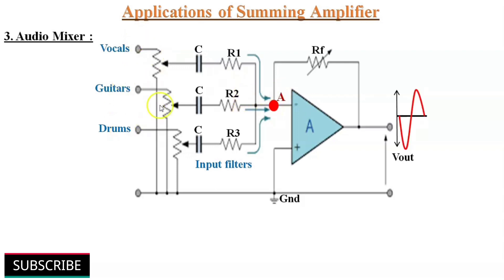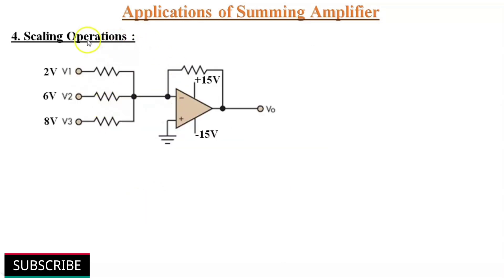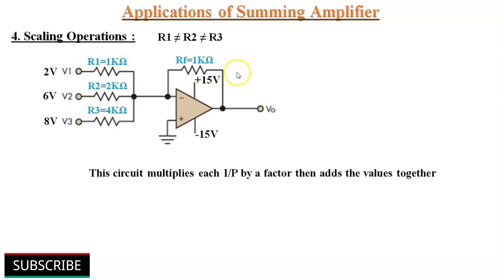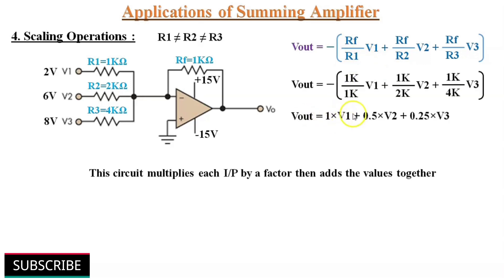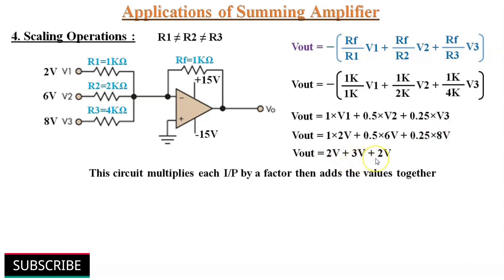A summing amplifier can also perform scaling operations. If all 3 input resistor values are different, then this circuit multiplies each input by a factor determined by the ratio of the feedback resistor to the input resistor, and then adds the values together. For example, Vout equals 1 times V1 plus 0.5 times V2 plus 0.25 times V3. With V1 = 2V, V2 = 6V, and V3 = 8V, we get Vout = 2V + 3V + 2V = 7V. So the summing amplifier can work as a scaling amplifier.